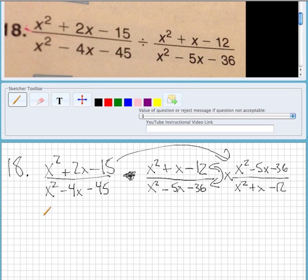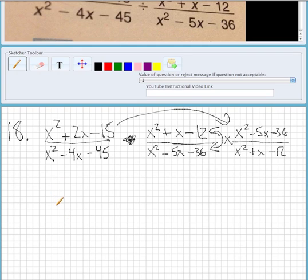What we want to do now is factor each one of these trinomials. So the first one is going to be x, something that multiplies to negative 15 and adds to positive 2. So it's going to be plus 5, x minus 3.